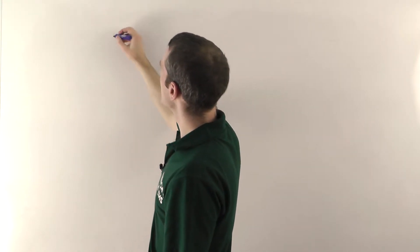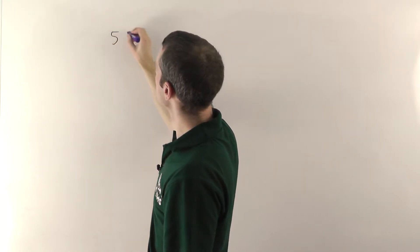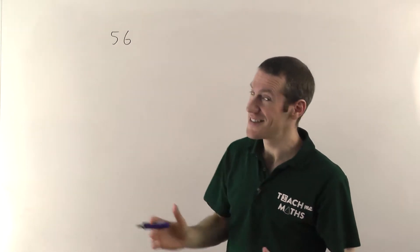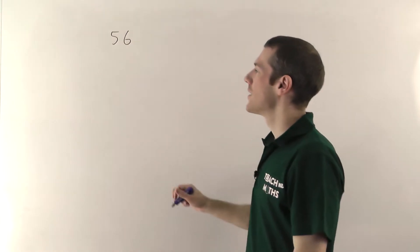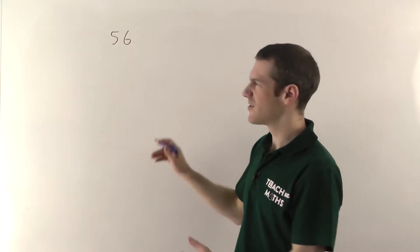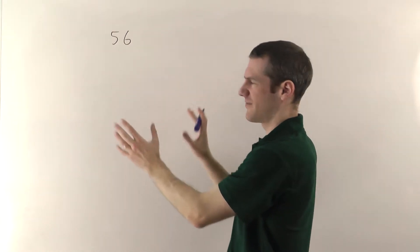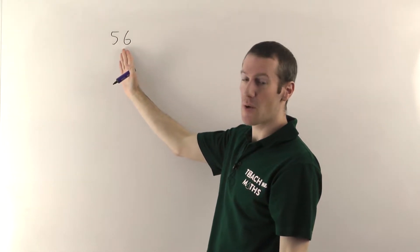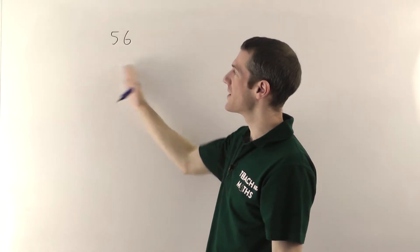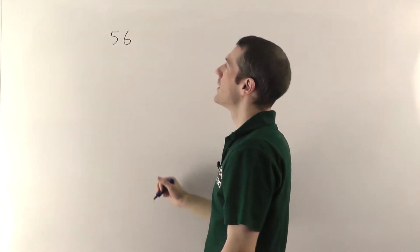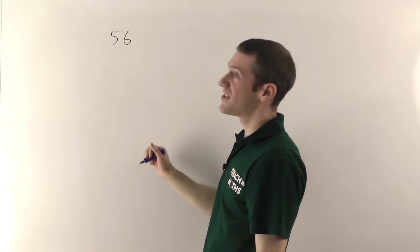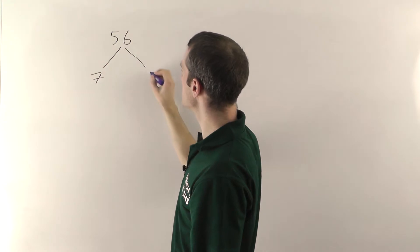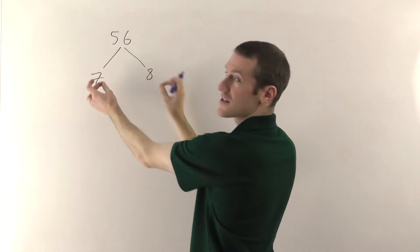Alright so let's imagine we start with a number like 56. To do a prime factor decomposition of this number we use a method called the tree method. You'll see why because it kind of branches out and looks vaguely tree-like when you're finished. What you do is you say does anything go into 56? Can I split this up into something times something else? Well in this case 7 times 8 is 56 so I can split this up into 7 times 8. So it branches out either side.